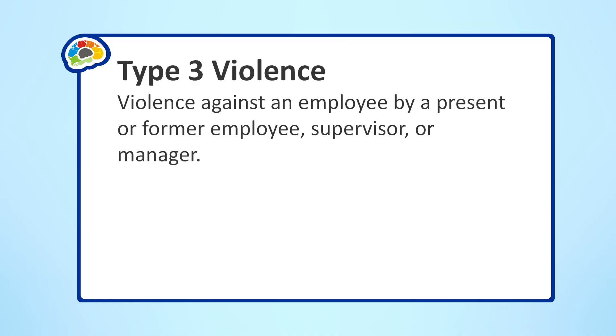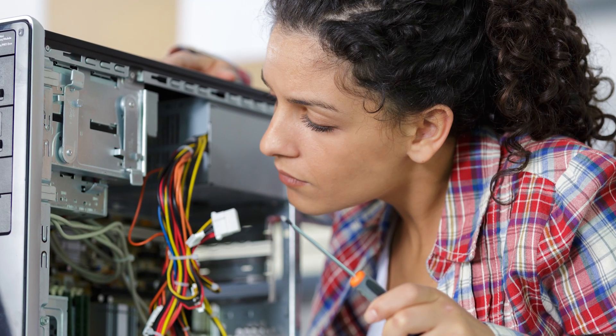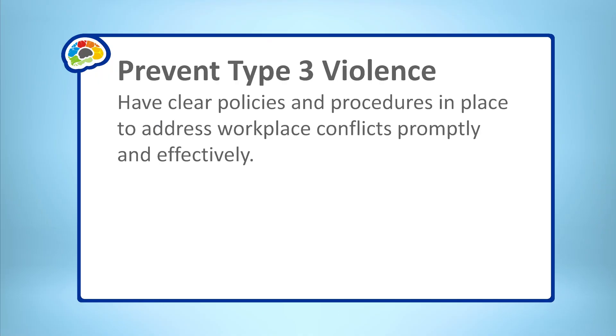Type 3 violence is workplace violence against an employee by a present or former employee, supervisor, or manager. This type of violence may arise from conflicts between coworkers, disputes over promotions, disagreements about work-related matters, or personal grievances spilling over into the workplace. It can manifest in various forms such as verbal altercations, physical confrontations, harassment, or sabotage of work equipment or projects. To prevent Type 3 violence from escalating, it's essential for employers to have clear policies and procedures in place to address workplace conflicts promptly and effectively.